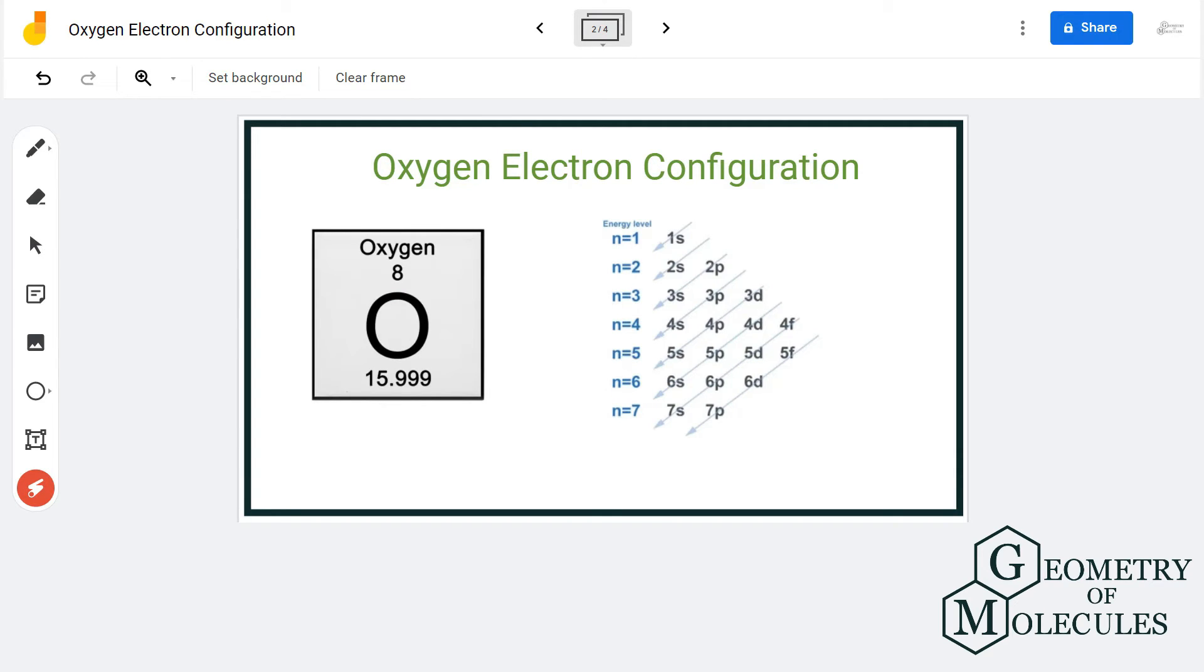So each s orbital can hold up to two electrons, and the first electron will go into the 1s orbital. And as it can hold up to two electrons, we will first write 1s². Similarly, we will repeat it for 2s orbital as well, as even a 2s orbital will hold up two electrons, so 2s².